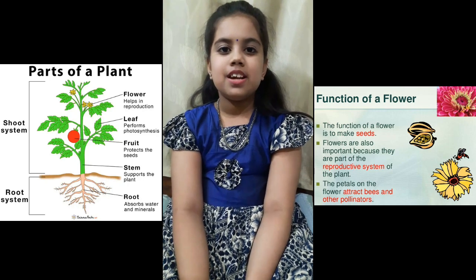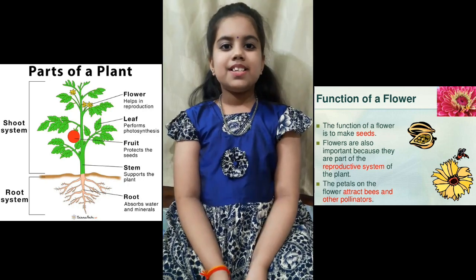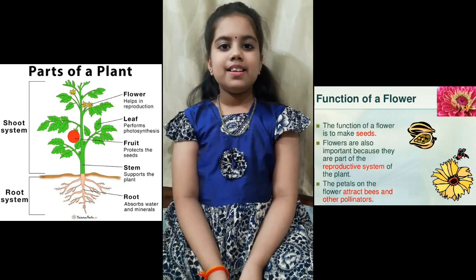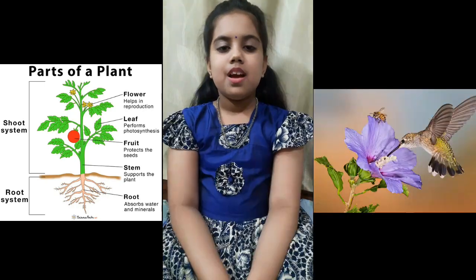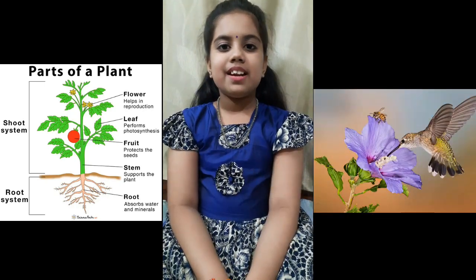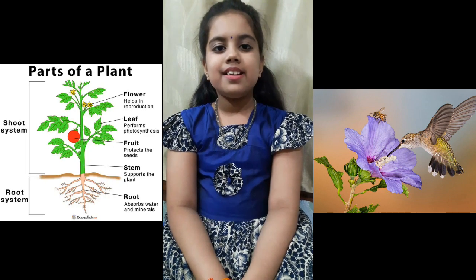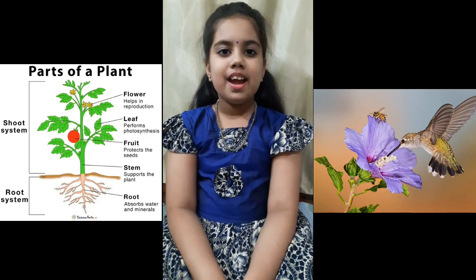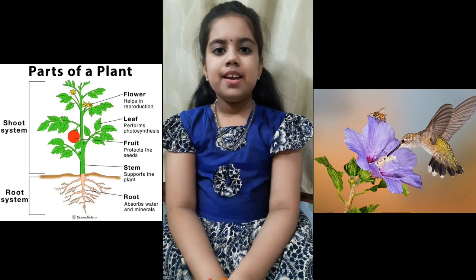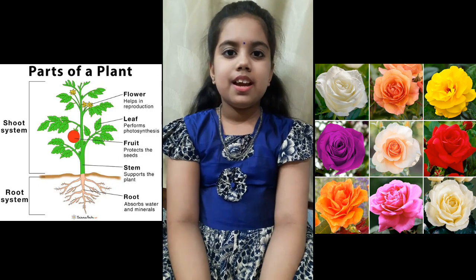Next one is flower. Flowers are the parts of the plants that make seeds and fruits. Flowers are colorful, so they easily attract hummingbirds and bees. An example is rose.